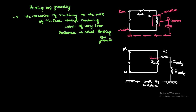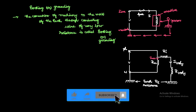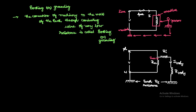So, earthing or grounding means we are connecting the machine through a conducting wire of very low resistance. Now let us understand what is the necessity for connection of the earthing system.